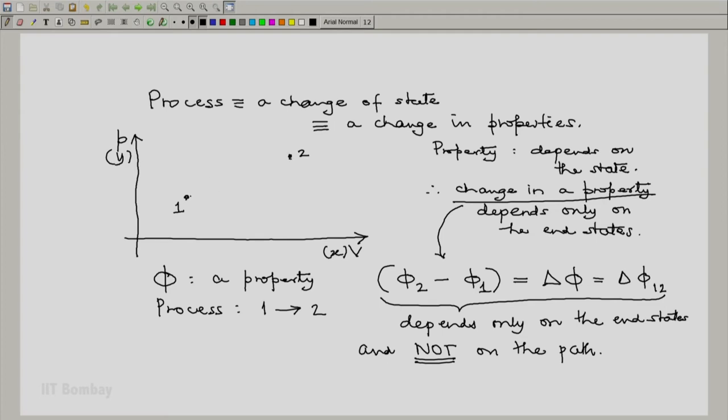So if I consider a quasi-static process from 1 to 2 like this, I will have delta phi 1-2 as a change in property. If I take another quasi-static process from 1 to 2, let us say the first process is A, second process is B, again I will have the same change in property.